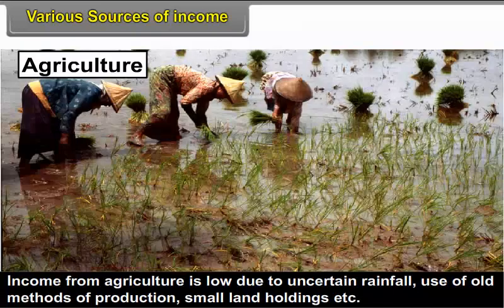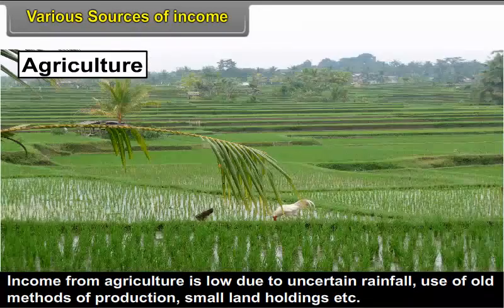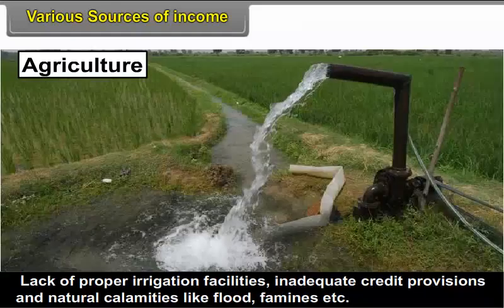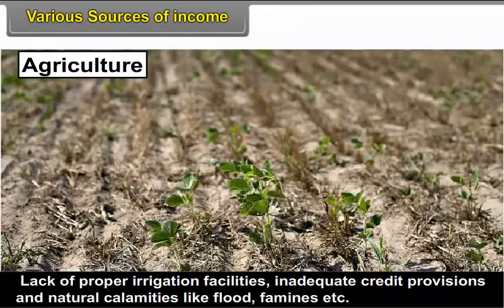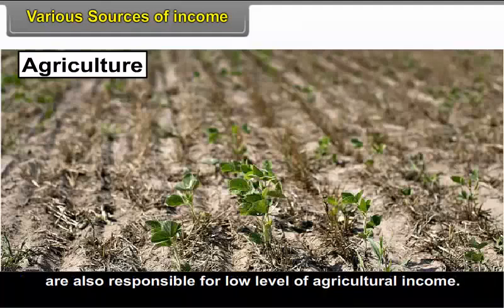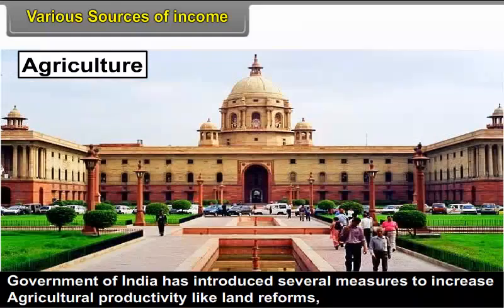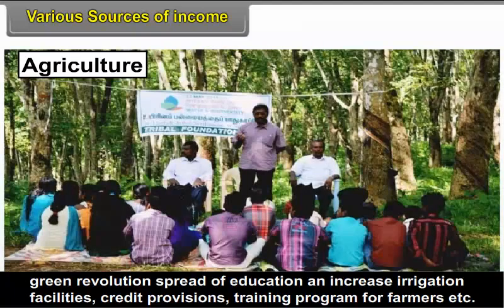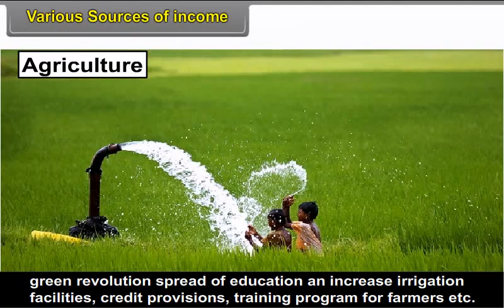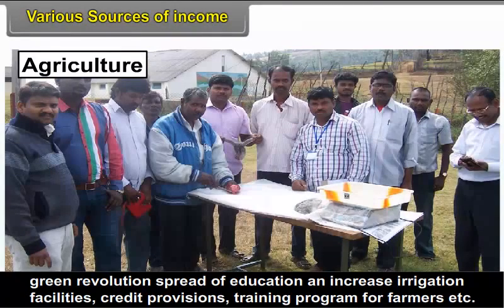Income from agriculture is low due to uncertain rainfall, use of old methods of production, small land holdings, lack of proper irrigation facilities, inadequate credit provisions, and natural calamities like floods and famines. Government of India has introduced several measures to increase agricultural productivity like land reforms, green revolution, spread of education, increase in irrigation facilities, credit provisions, and training programs for farmers.